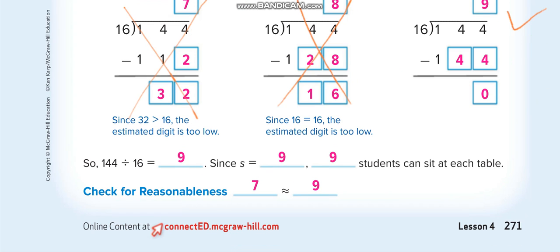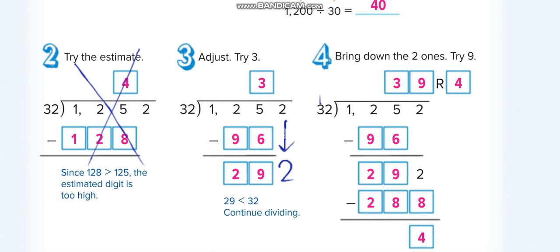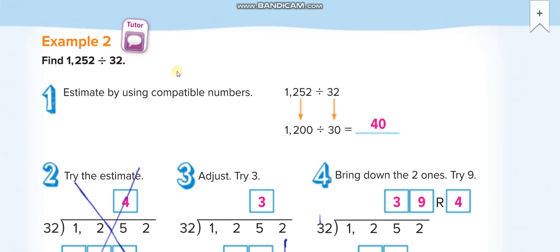16 times 9 equals 144 with no remainder. Of course, 0 is less than the divisor. On the next page, they are trying numbers one by one because the first two digits are less than the divisor, so you take three digits together.